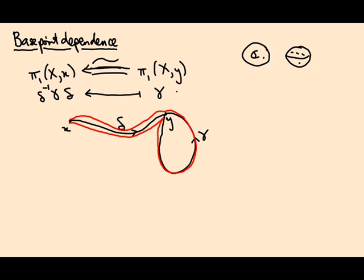So the claim is this map is an isomorphism. Well, I guess first the claim is that it's well defined. And that it's a homomorphism. And that it's invertible. And that will show it's an isomorphism.